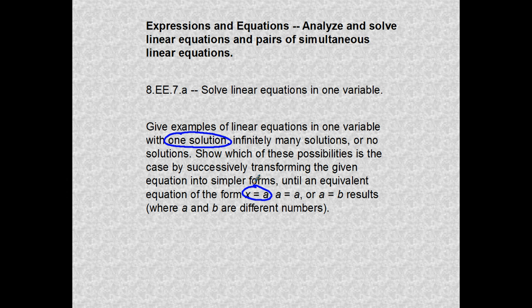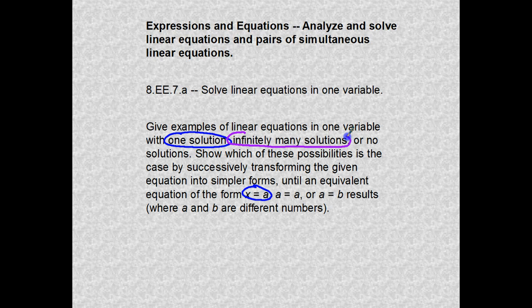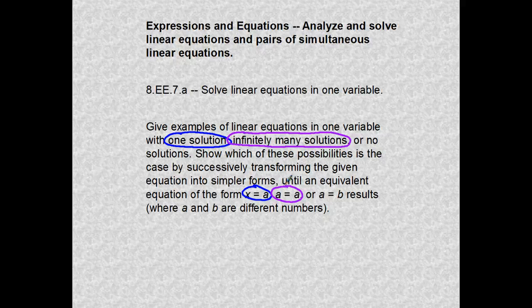The second thing that could occur is that X could actually be any answer off the number line. We call that infinitely many solutions. It's represented as A always equaling A — meaning whatever we plug in for the variable, both sides will look exactly alike.